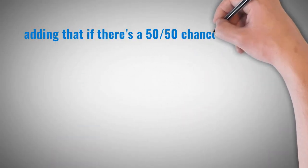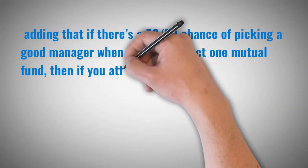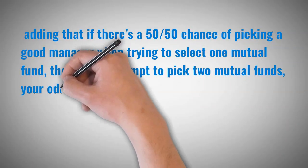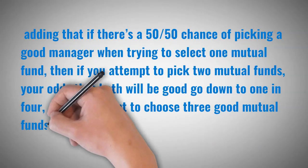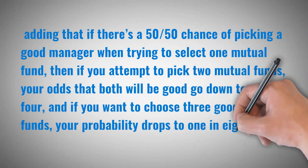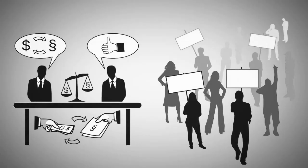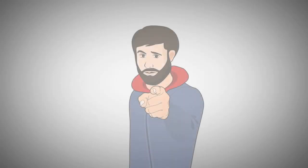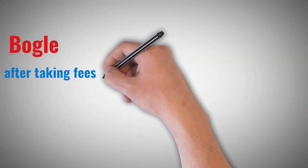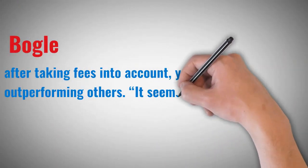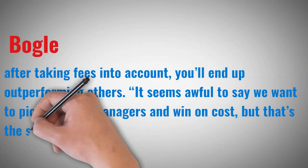then if you attempt to pick two mutual funds, your odds that both will be good go down to one in four, and if you want to choose three good mutual funds, your probability drops to one in eight, with four mutual funds, the likelihood is one in 16, and so on. While some investors might protest, saying that buying the market will guarantee you only average returns, Bogle says after taking fees into account, you'll end up outperforming others. It seems awful to say we want to pick average managers and win on cost, but that's the sure way, he said.